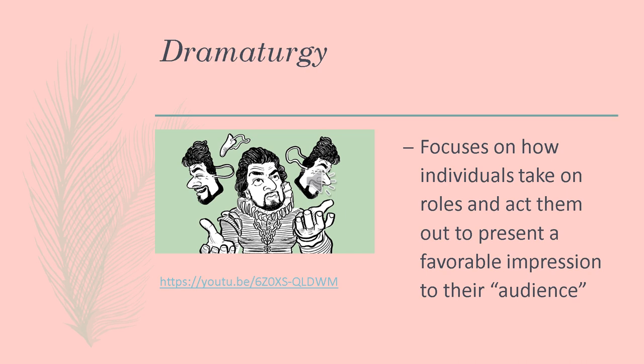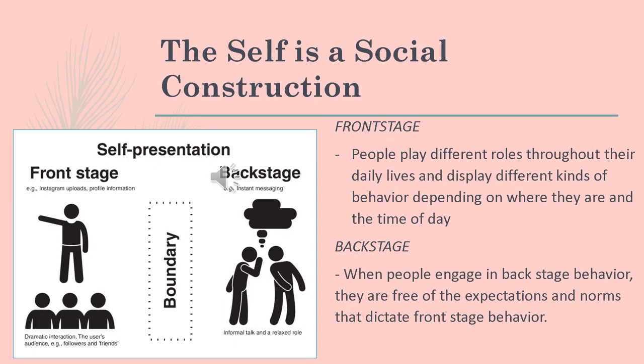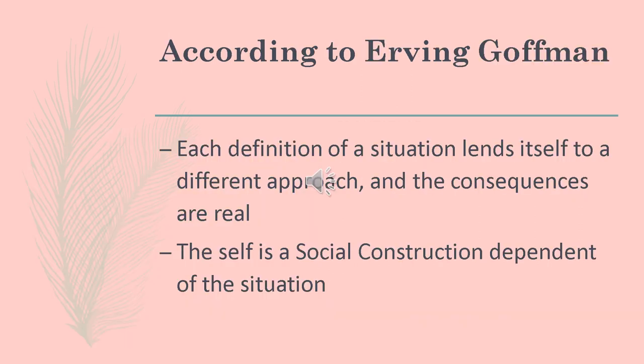The society or community we are in serves as the audience in the presentation of the self in everyday life. Goffman argues that people are concerned with controlling how others view them — a process he called impression management. There are two presentations in constructing ourselves in social interactions: the front stage and the backstage. The front stage refers to the things we present and show to the people in front of us, while the backstage is the opposite — what we do away from those people. According to Goffman, each definition of a situation leads to a different approach and the consequences are real. The self is a social construction that depends on the situation.